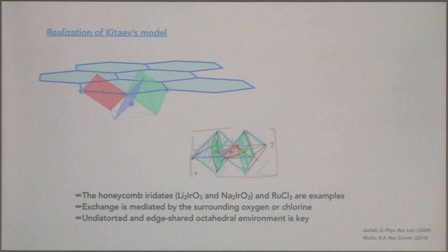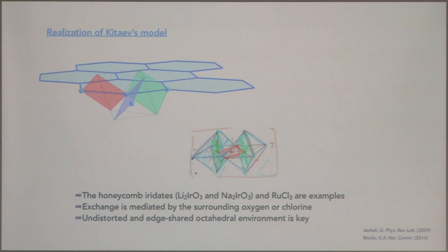It's quite surprising, given the complication of these anisotropic exchange interactions, that we actually have some materials which sort of represent this model. The two real key ingredients for finding this are large spin-orbit coupling and edge-shared octahedra. If you have exchange mediated by either the chlorine or the oxygen on the corners of each of the octahedra, then you end up with these three exchange plaquettes.